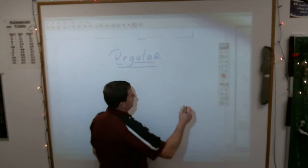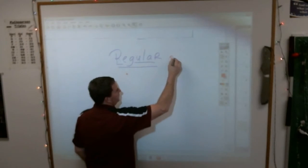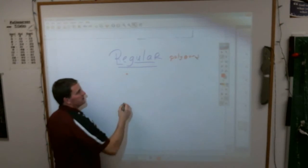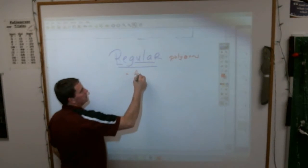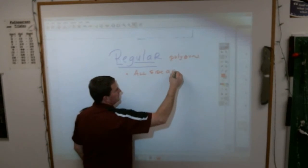Because you need to know what regular is when it comes up in your book. When you see the word regular, regular means, when they talk about regular polygons, regular polygons mean that all sides are equal.